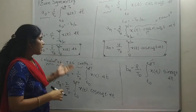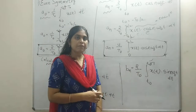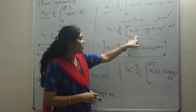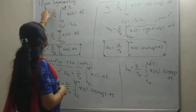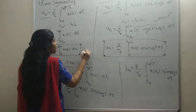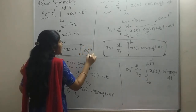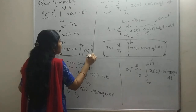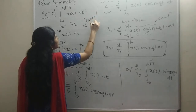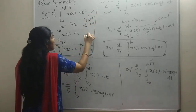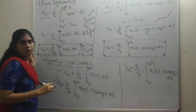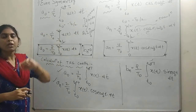Similarly, for bₙ when the signal has even symmetry: x(t) is even but sine is an odd function. Even × odd = odd function. From the standard integration property, the integral of an odd function from −a to a equals 0. Therefore, bₙ = 0 when the signal has even symmetry. These results follow directly from the integration properties: integral from −a to a of f(x) dx = 0 if f(x) is odd, and = 2 × integral from 0 to a if f(x) is even.